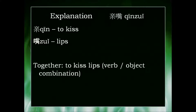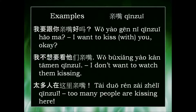The first character 亲 means to kiss — this character by itself is a verb which means to kiss. And 嘴 is short for 嘴唇, which means lips. So 亲嘴 means to kiss lips. It is a verb-object combination in Chinese, and verb-object combinations are very common in this format.